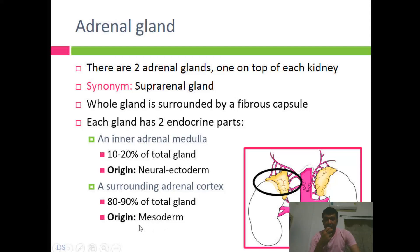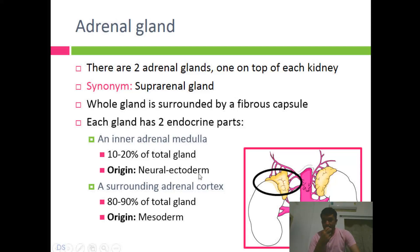This gland is embryonically derived from mesoderm, while the medulla is a special type of tissue — it is actually a specialized type of post-ganglionic sympathetic nerve. Since it is a modified neuron, it has to be derived from the ectoderm, specifically the neural ectoderm.